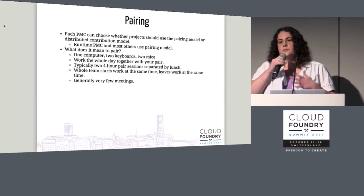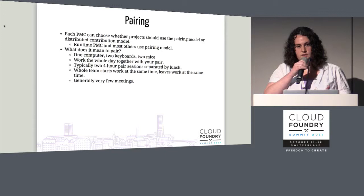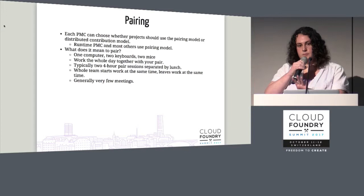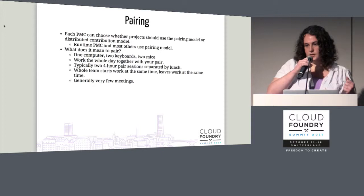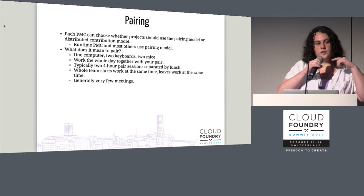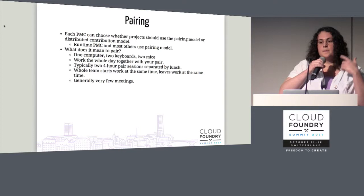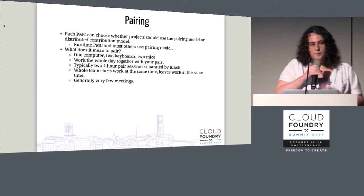So what does it mean to pair for us? It means you have one computer, with two engineers working at that one shared computer. You often have two monitors, two mice, two keyboards, but you're both controlling the same computer. Everything that you work on, you're collaborating with your pair on. You pick off a story from the backlog, figure out what you're going to work on that day, and you immediately start talking about it. It's like regular development, but instead of everything happening in your head, it's happening through your mouth — you're getting feedback constantly from your pair.